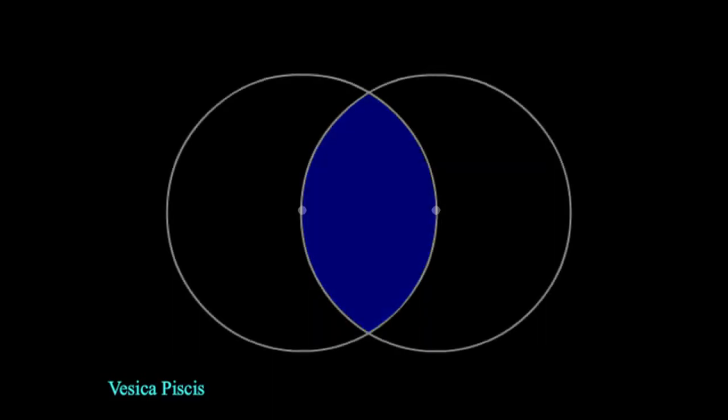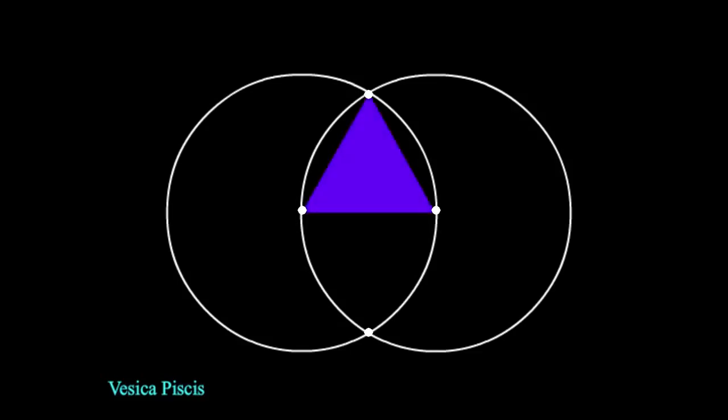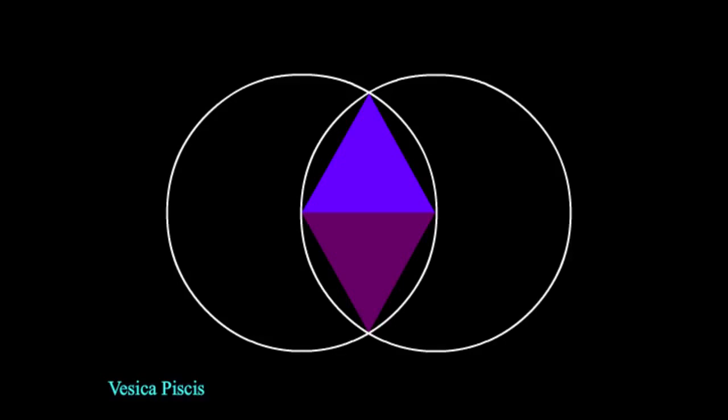You see, by creating the Vesica Pisces using the two points that already exist, we have actually created two more, one at the top and one at the bottom, where the two circles intersect. And by connecting these points up, we get our first straight edge shape, the equilateral triangle. And not just one, we get two, a reflection. A little bit like the two circles, but now in the form of triangles. Essentially, a reflection within a reflection.